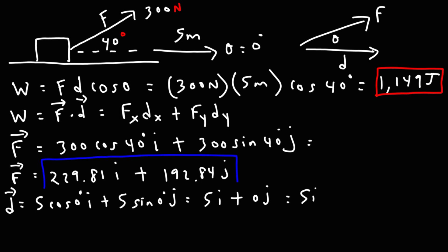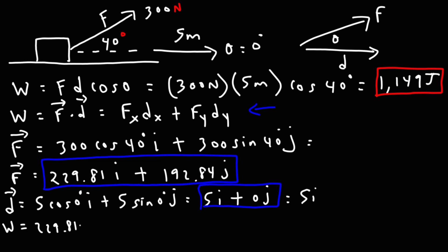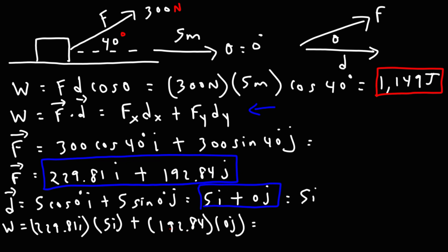Now we have both the force vector and the displacement vector in component form. Plugging into the dot product formula: the work done is fx times dx plus fy times dy. That's 229.81 times 5 for the x part, plus 192.84 times 0 for the y part. There's no work done in the y direction, so it's 229.81 times 5, which gives the same answer of 1,149 joules.